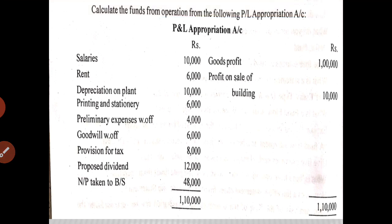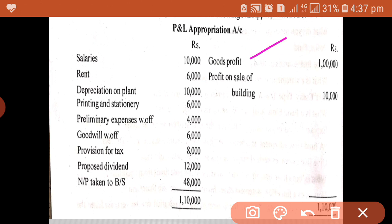Here is one more question: calculate fund from operation from the following profit and loss appropriation account. On the credit side: gross profit, profit on sale of building. On the debit side: salary, rent, depreciation, printing and stationery, preliminary expenses written off, goodwill written off, provision for tax, proposed dividend, and net profit taken to balance sheet. We can use the direct method or indirect method. For the direct method, simply start with gross profit, then consider the cash operating expenses.